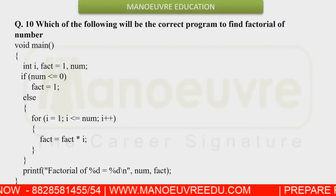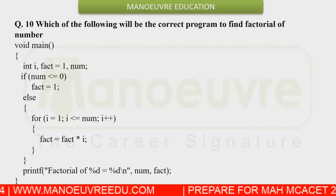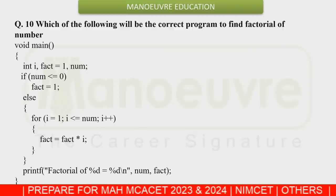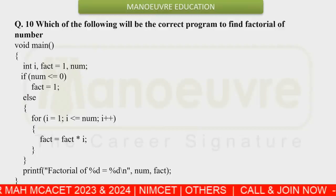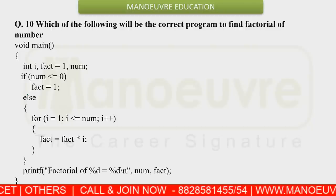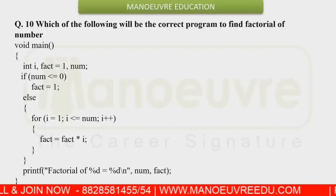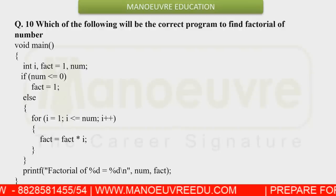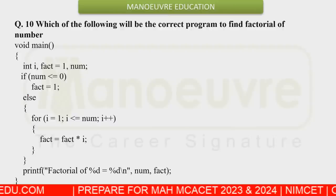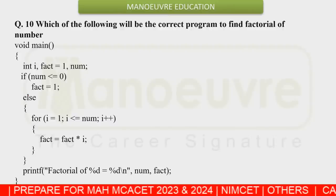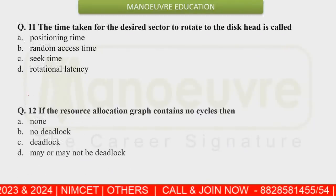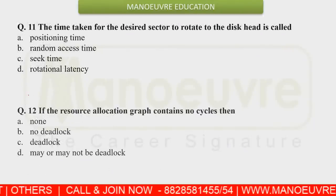They gave four options with actual programs — recursive functions for finding factorial — and you needed to identify which one was exactly correct. Make sure you go through the options very carefully because all four options were very closely similar. Such questions — almost four to five of them — required careful identification of the single correct option among very minute differences.